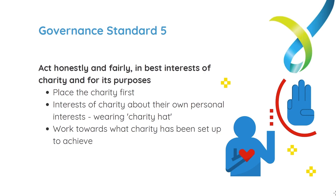The second duty that responsible people have is to act honestly and fairly and in the best interests of the charity and for its charitable purposes. This means responsible people must place their charity first — the interests of the charity have to be paramount in decision making. Responsible people have a responsibility to put the interests of the charity above their own personal interests when acting in their role within the charity. We like to think of this as putting a charity hat on when you're in that role. Finally, making sure that the charity continues to work towards its charitable purposes — basically, what it was set up to achieve, or its mission. That idea of having a charity hat on is a good visual tool to keep in mind when serving as a responsible person.